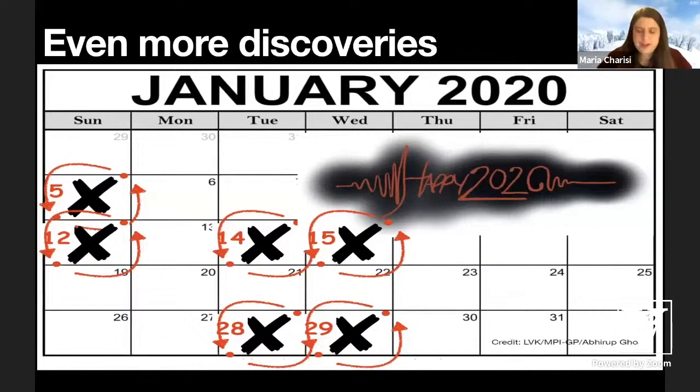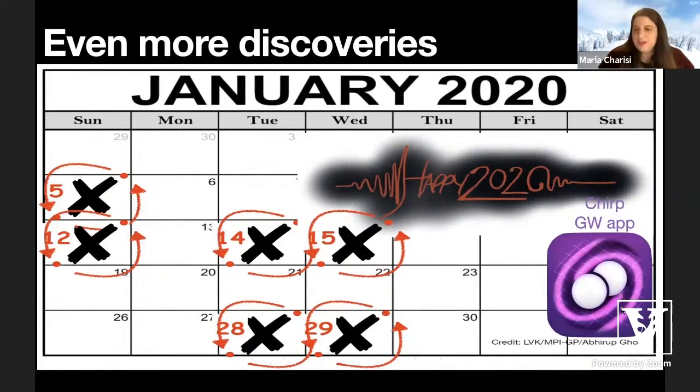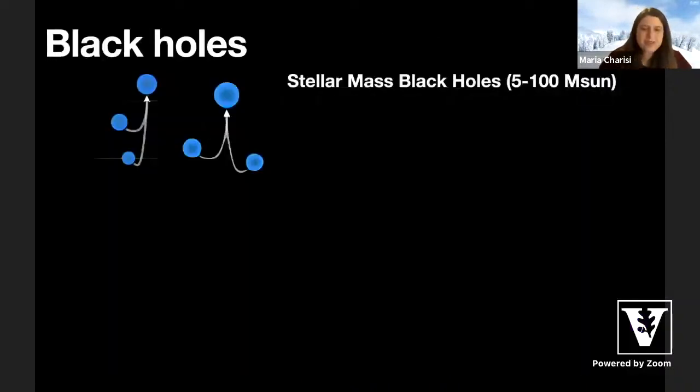Of course, observing binary black holes with LIGO, it became a routine. We would have one at least every week. This is a calendar from January last year. So that was almost the last month before the pandemic. And then during the pandemic, they switched off the detector. And of course, the LIGO collaboration developed an app that you can download on your phone and you can get an alert every time a binary black hole is detected by LIGO once the detector is turned back on.